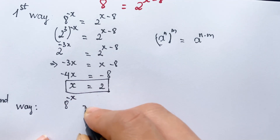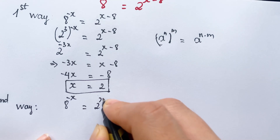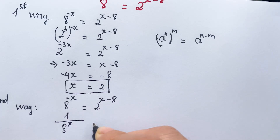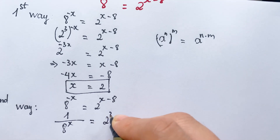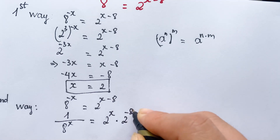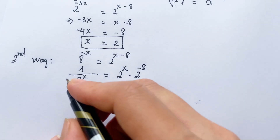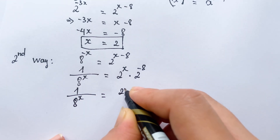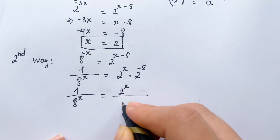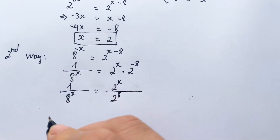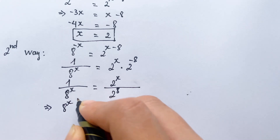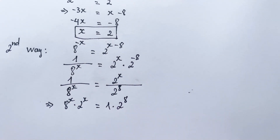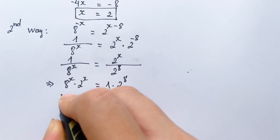For the second way, you can rewrite 8 power minus x as 1 over 8 power x, and it equals 2 power x times 2 power negative x, which equals 2 power x over 2 power x. Then rewrite: 1 over 8 power x equals 2 power x times 2 power x times 2 power x equals 1 times 2 power 8, so it's 8 power x.